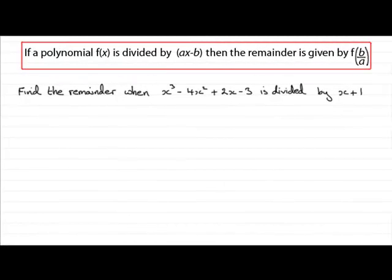Hi. In this example, what we've got to do is find the remainder when the polynomial x cubed minus 4x squared plus 2x minus 3 is divided by x plus 1.